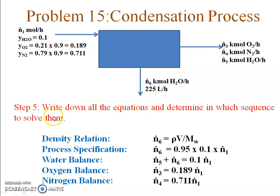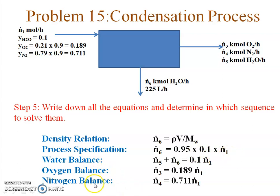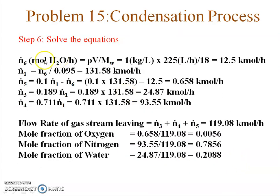Now I write all equations and determine the solution sequence. Using the density relation: density × volumetric flow rate ÷ molecular weight of water gives the molar flow rate of the condensate Ṅ6. Then using the process specification Ṅ6 = 95% × Ṅ2, I can calculate Ṅ1. After that, I apply the water balance, oxygen balance, and nitrogen balance to calculate the remaining variables.